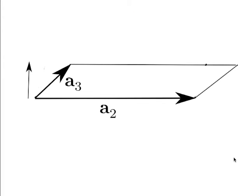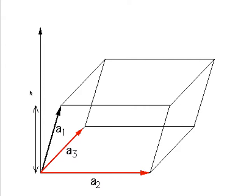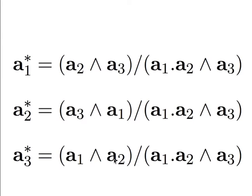We have got this plane a2 a3, and when we take a cross product we get a vector which is normal to that plane. It is better illustrated on this diagram where we have a parallelepiped formed by the basis vectors. Notice that when I take the cross product of a2 and a3, it is not necessarily parallel to a1 — it is pointing at 90 degrees to that plane. We define reciprocal lattice vectors as: a1* = (a2 cross a3) divided by (a1 dot (a2 cross a3)).